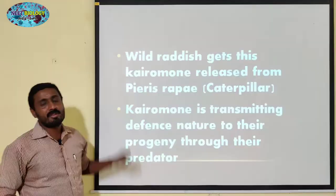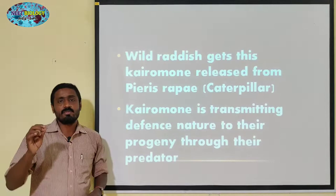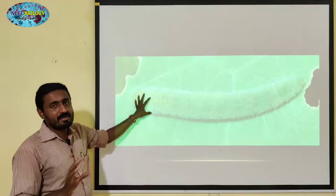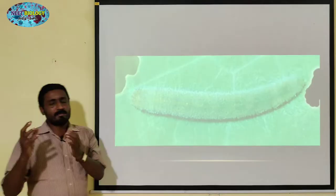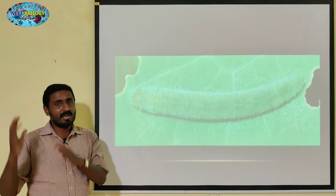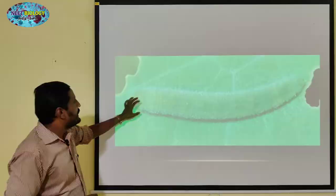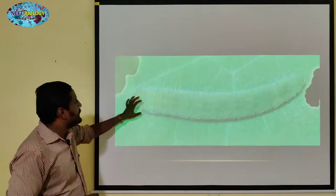Especially Pieris rapae — it's a type of worm. Its life cycle includes a caterpillar stage. But what happens in this caterpillar stage?